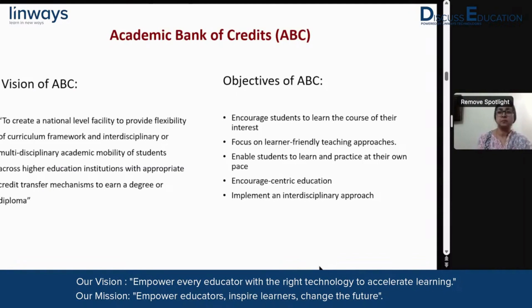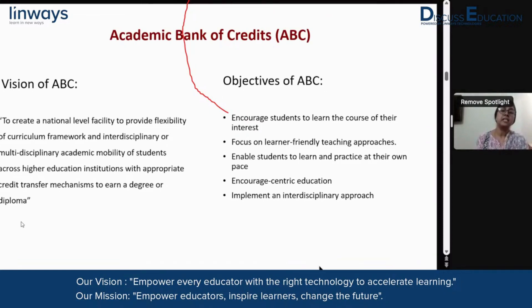The vision of ABC is to create a national level facility to provide flexibility of curriculum and interdisciplinary or multidisciplinary academic mobility of students across higher education institutions with appropriate credit transfer mechanisms. Very importantly, this breaks the compartmentalization of disciplines because a student can earn credits after completing courses of his or her choice across institutions, paving the way for interdisciplinarity and multidisciplinarity in terms of the program or the courses.